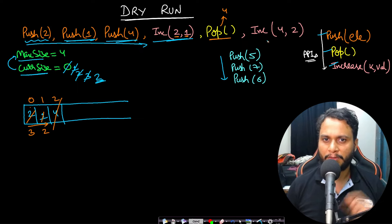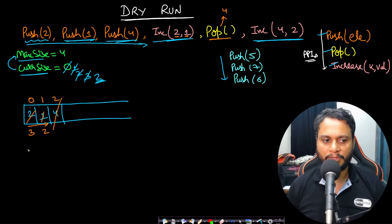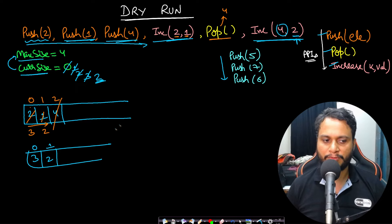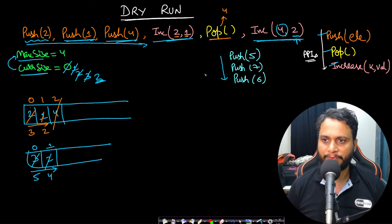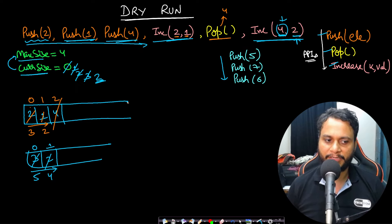The next increment increases the first four items by 2. But we only have two items — 3 and 2 at index 0 and 1. Since there are fewer items than k, we increment all of them. Both become 5 and 4 respectively. We run the loop for the minimum of k and the current stack size — the minimum of these two is taken.